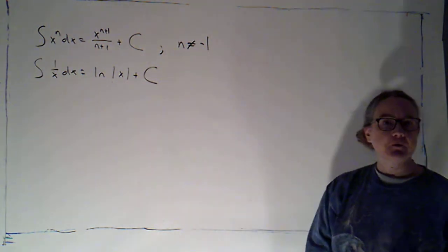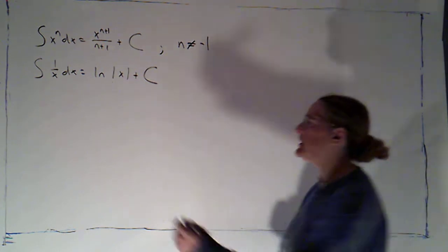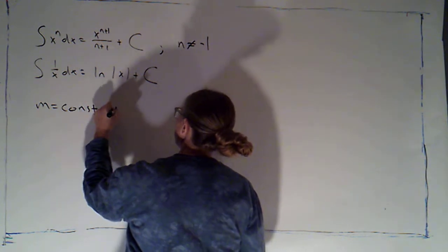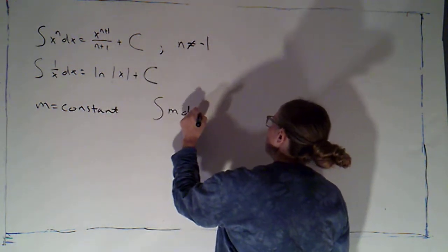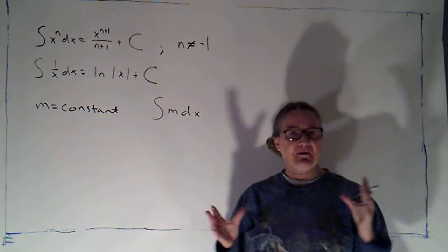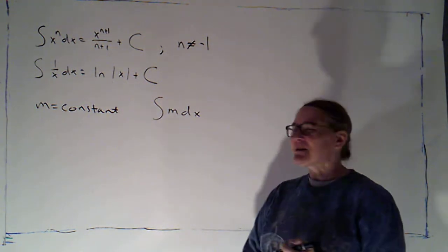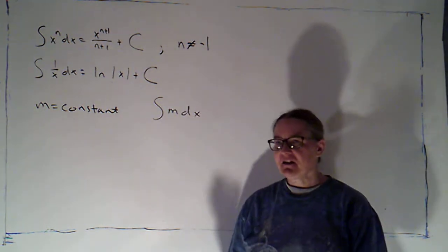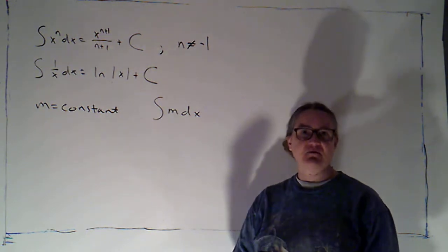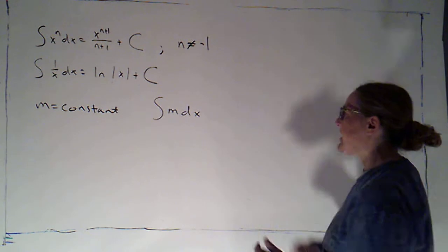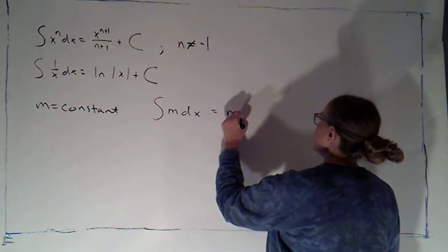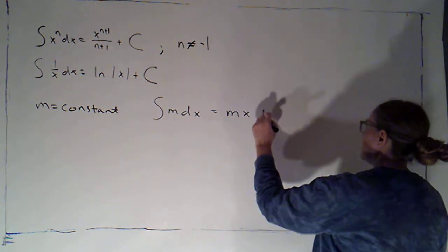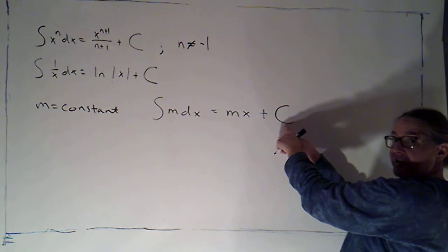I want to add to the list of rules, starting with one we talked about at the end of the last video. If I let m be a constant and I integrate m with respect to x — I chose m to represent my arbitrary constant because I'm thinking of it as the slope. Here we're saying the derivative is constant. The sorts of things that have constant derivatives are lines, which have constant slopes. So the general antiderivative is just going to be a line of slope m — m times x, plus an arbitrary constant.